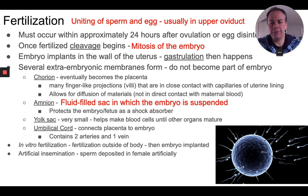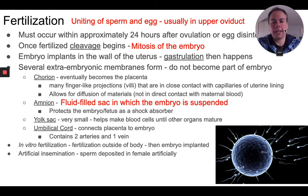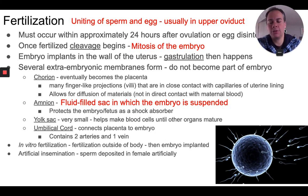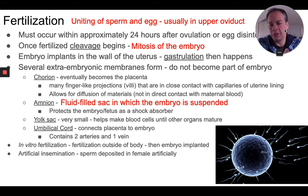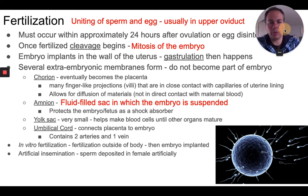Sometimes when a couple wants to have a child but is unable to do so naturally, reproductive technologies may be used. One is in vitro fertilization, where a doctor takes an egg cell from the mother's ovary and sperm cells from the father and fertilizes the egg outside the body in a petri dish. That embryo is allowed to go through cleavage and divide a few times to form a small embryo, then the doctor implants it back into the mother's uterus where it grows into a fetus and eventually a child. Another treatment is artificial insemination, where sperm cells from a male are inserted into the female's vagina so fertilization can take place naturally.